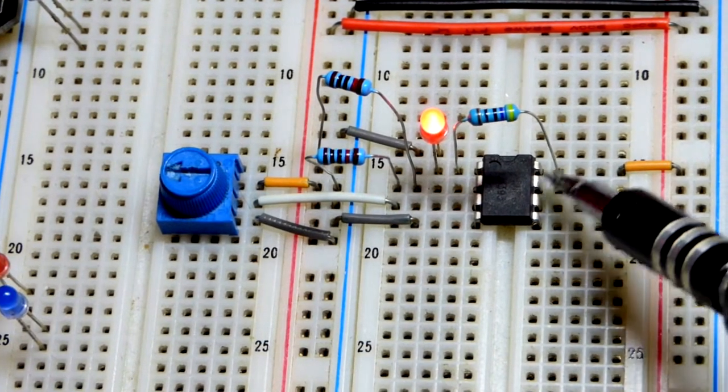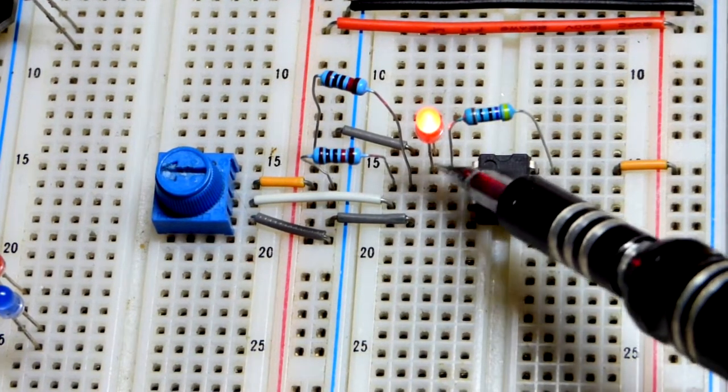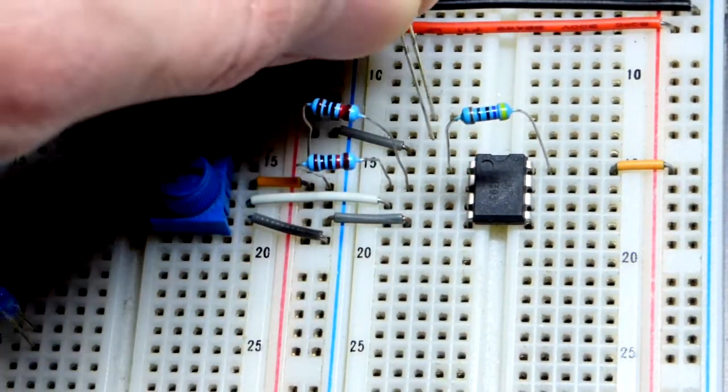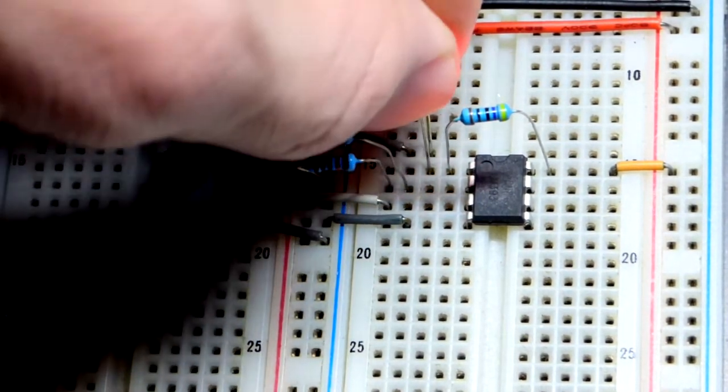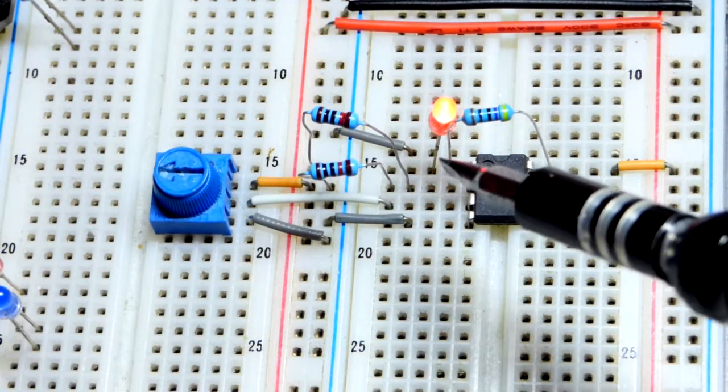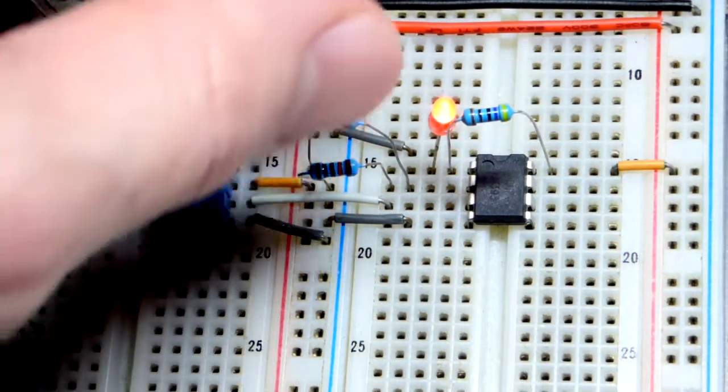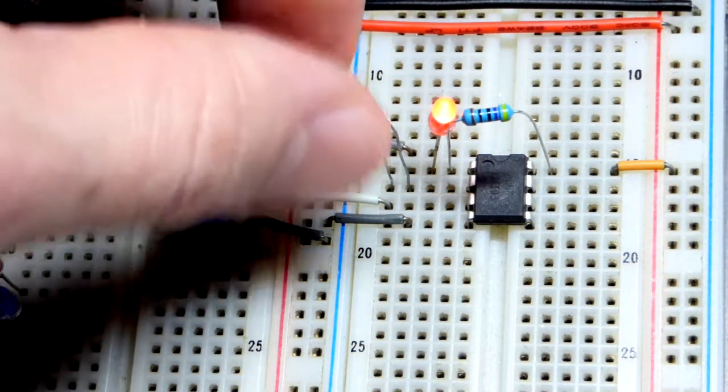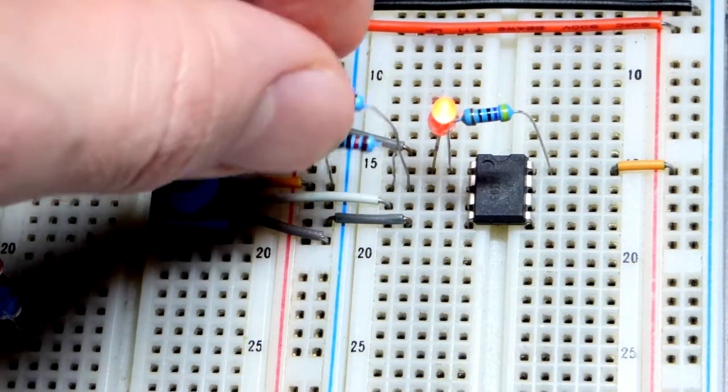So in this case, we have our 450 ohm resistor coming to the long lead, the anode of the LED right there. Short lead to cathode going up to that jumper there. So right now, the output's not doing anything. So current is just flowing through the resistor and the LED to ground right there. We set our voltage to, since it's a 5 volt power supply, to 2.5 volts with two equal value resistors. One to the positive supply, the other to the negative.